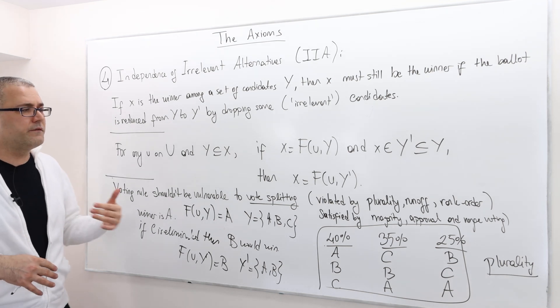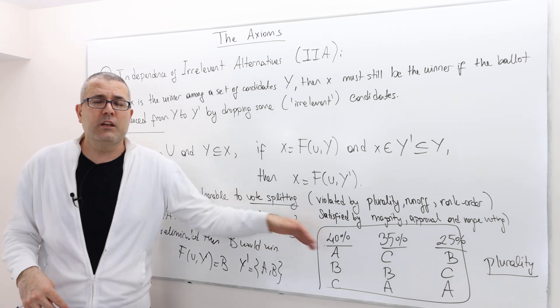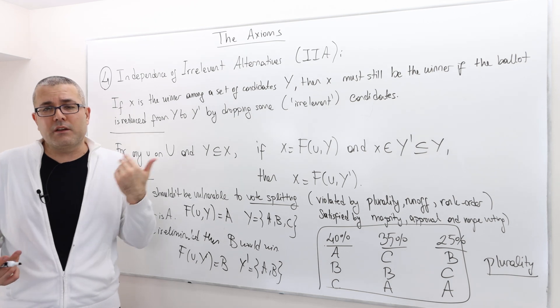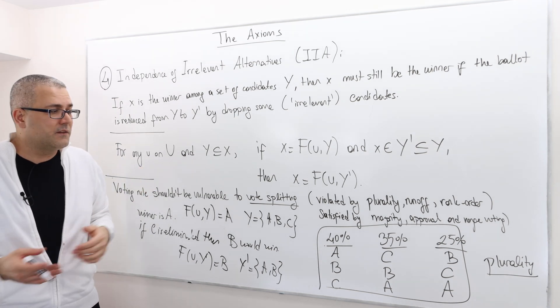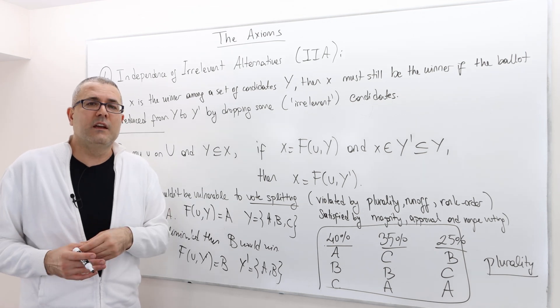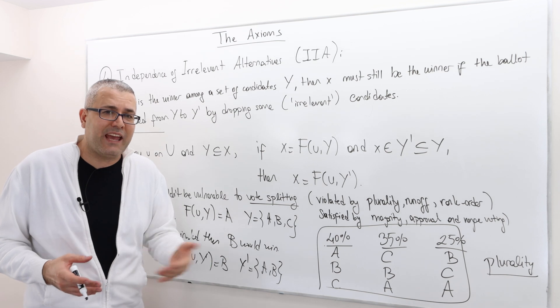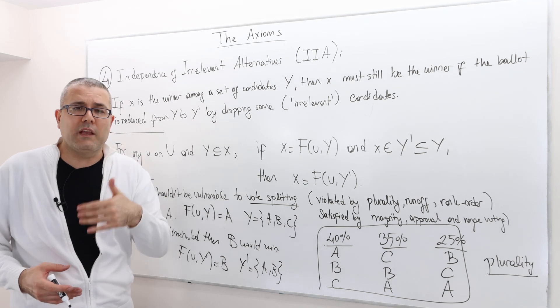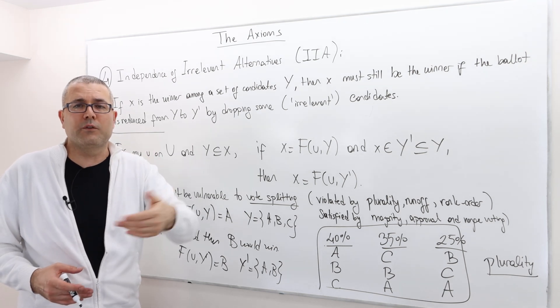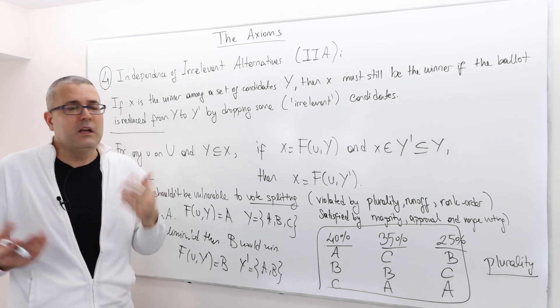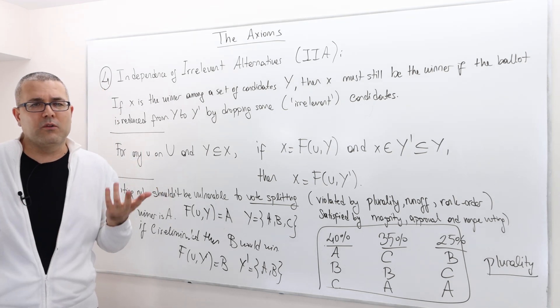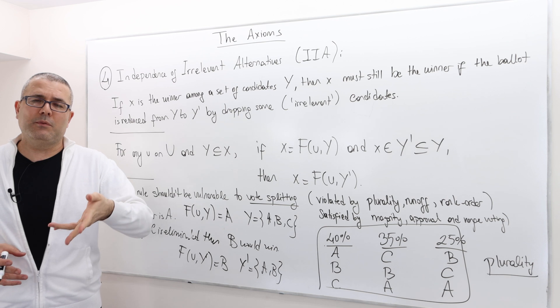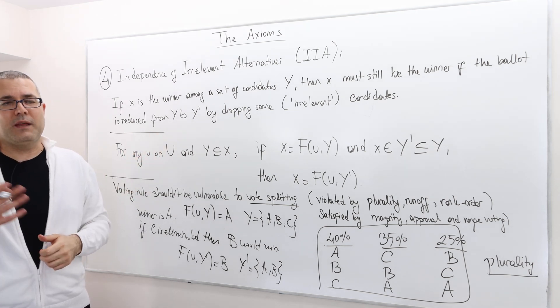And so some people argue that the voting rule shouldn't allow a scenario like this. It shouldn't allow vote splitting. But some other people argue that this is all about racing for the office. Sometimes having a candidate is a good thing for some candidates. And eliminating some candidates are not always a good thing for the likelihood of winning the election. And so, depending on the environment, depending on the many concerns, IIA would be an acceptable assumption or not. But this is what it is. I hope that was clear.